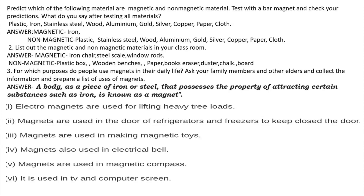List out the magnetic and non-magnetic materials in your classroom. In the classroom, the iron chair on which the teacher sits and a steel scale are magnetic materials. Window rods made of iron will also attract towards the magnet, so they are magnetic. Non-magnetic materials include plastic boxes, wooden benches, paper, books, eraser, duster, chalk, and the board — all not attracted by the magnet.